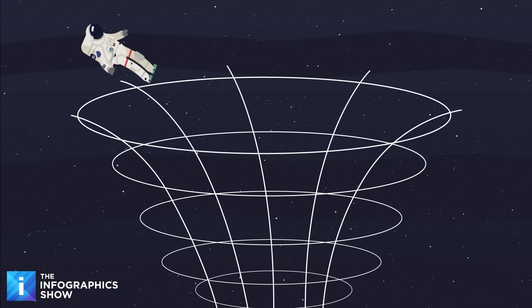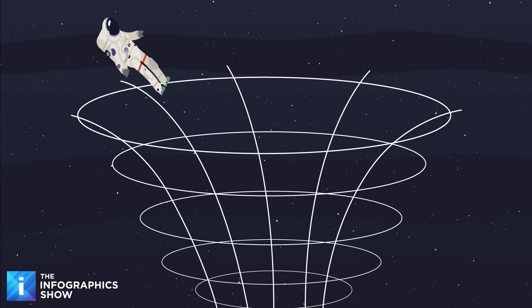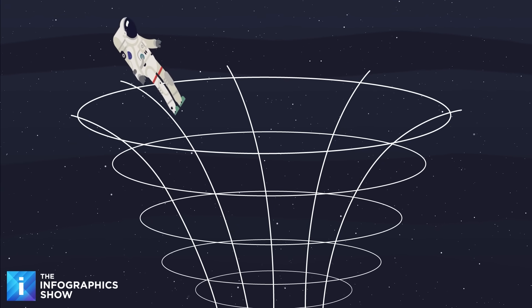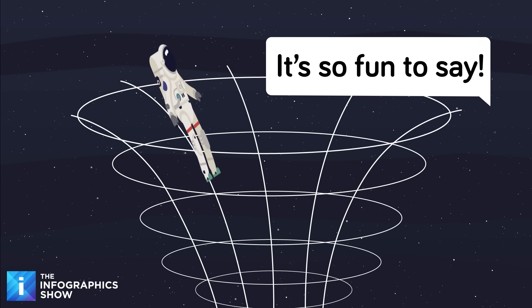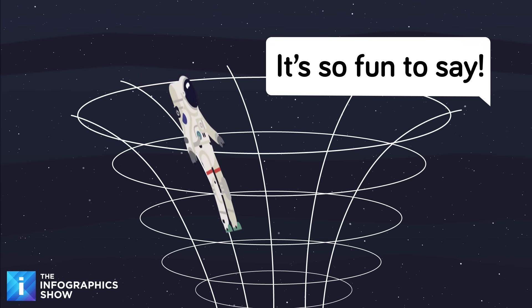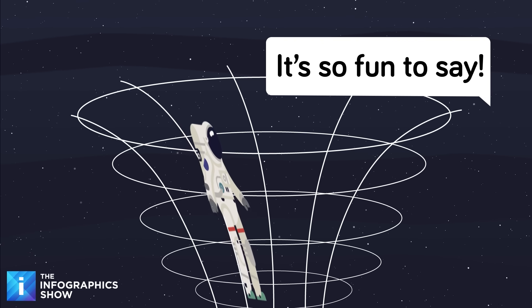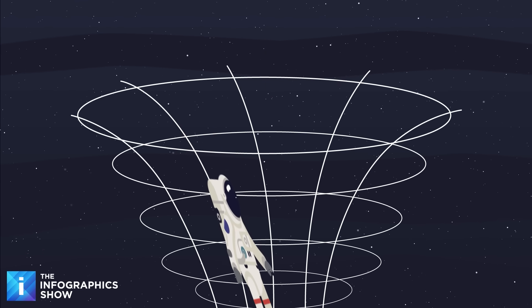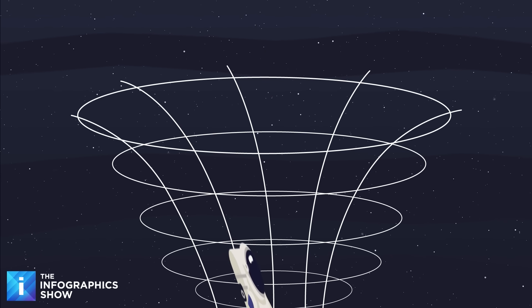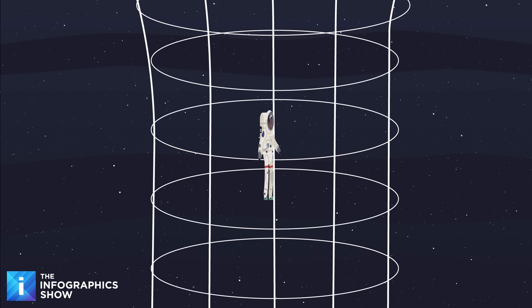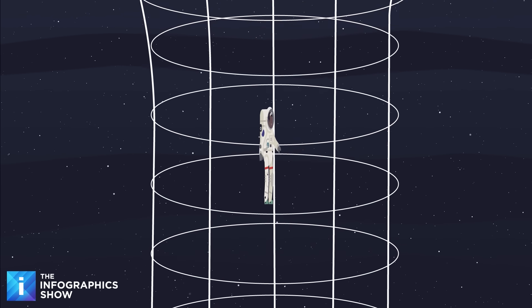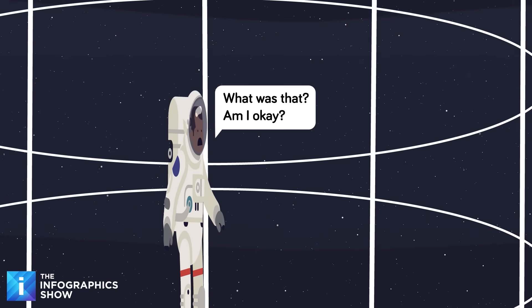Spaghettification might sound like a made-up word, but it is real. As an object falls into a black hole, the gravitational pull on its lower half becomes much stronger than on the upper half. That difference stretches it like cosmic taffy, pulling it into a thin stream of atoms spiraling helplessly toward the singularity. For a stellar mass black hole, this happens well before you reach the event horizon. You would be spaghettified while still technically outside of the black hole itself.